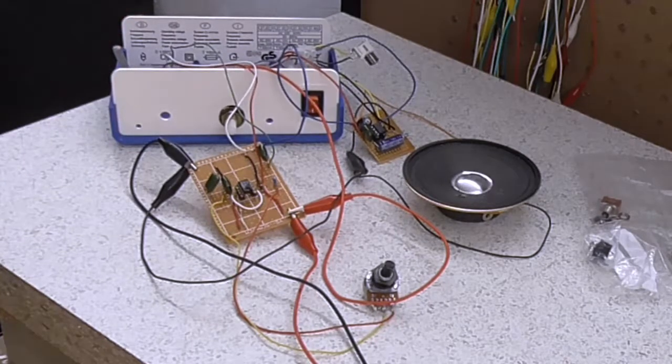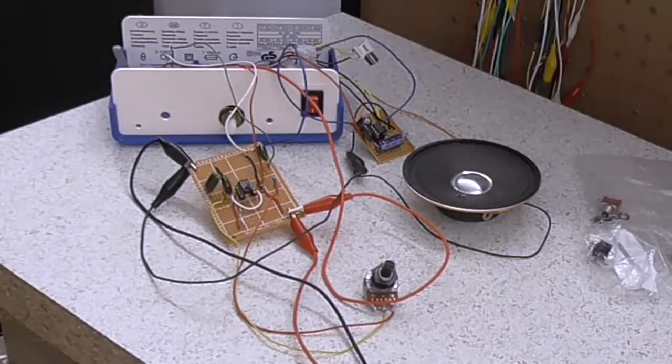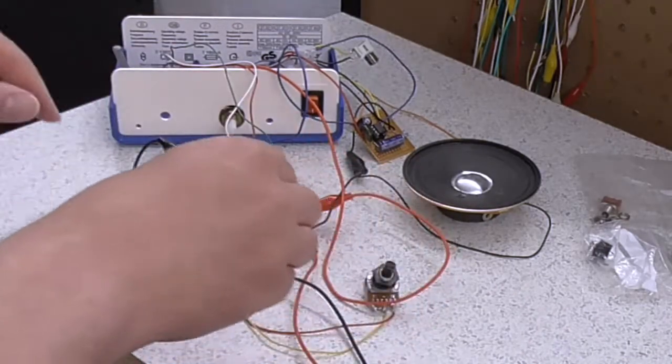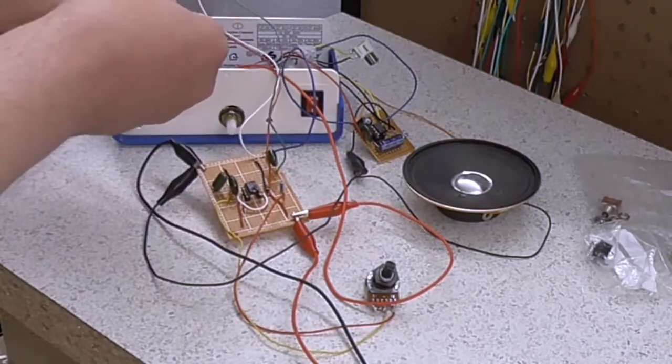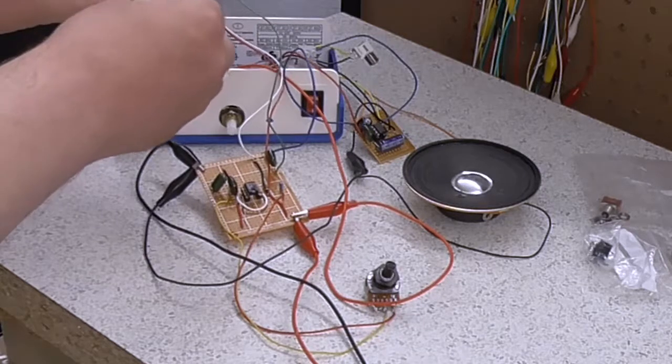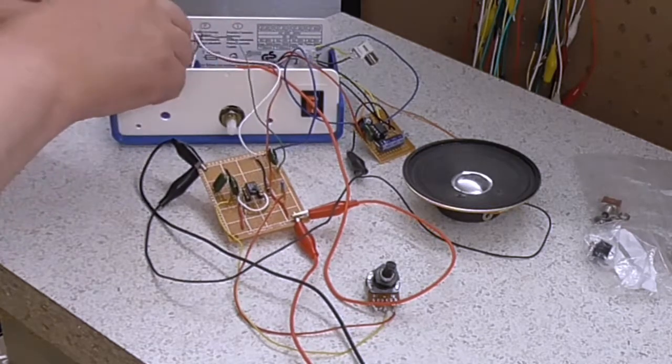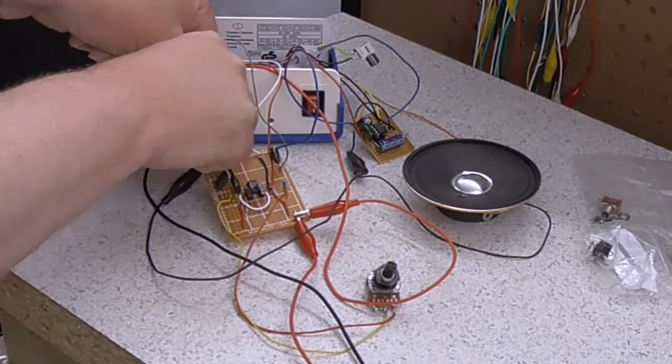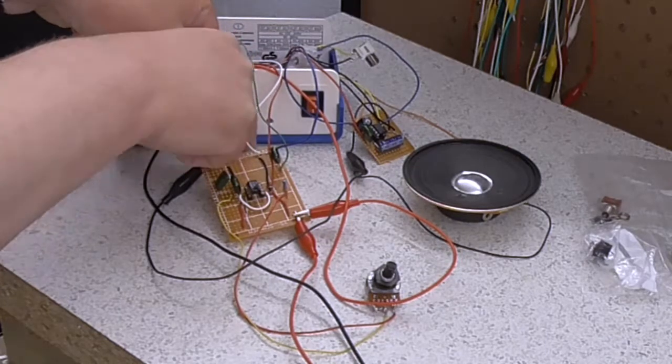So if I just turn the power on. Now that's the square wave generator going. This is the volume actually on the square wave generator itself. And the amplifier also has its own volume.